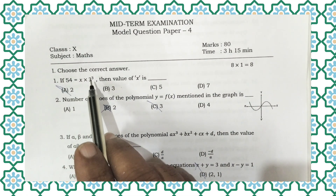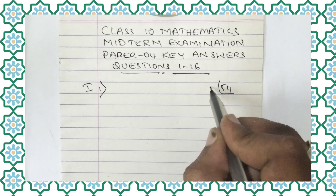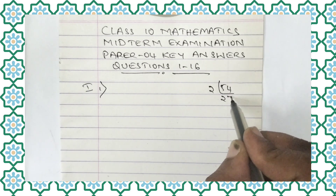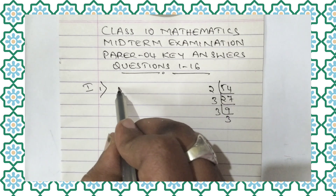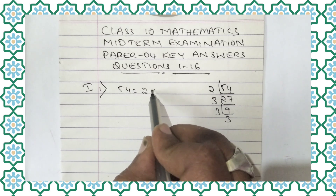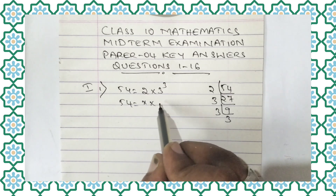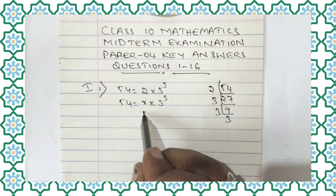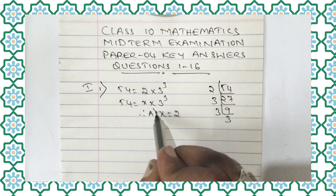The first question of paper 4: if 54 is equal to x into 3 to the power of 3, then the value of x is? 54 can be written as 2 into 3 to the power of 3. So, 54 equals x into 3³, which means x is equal to 2. Therefore, x equals 2, option A.